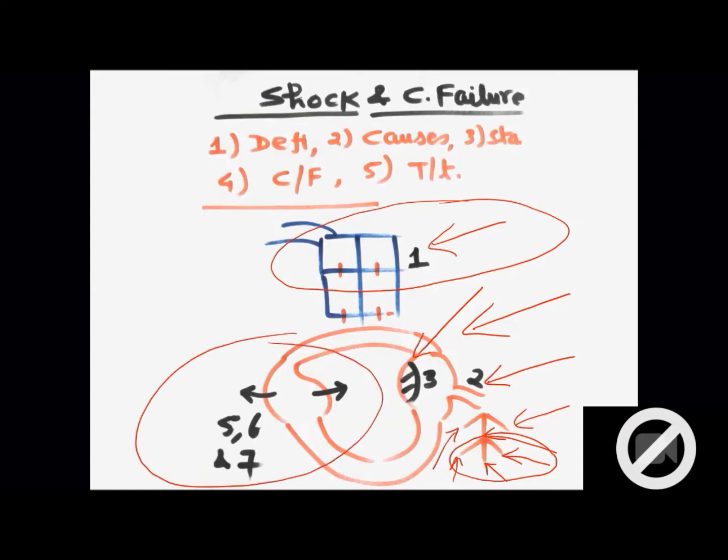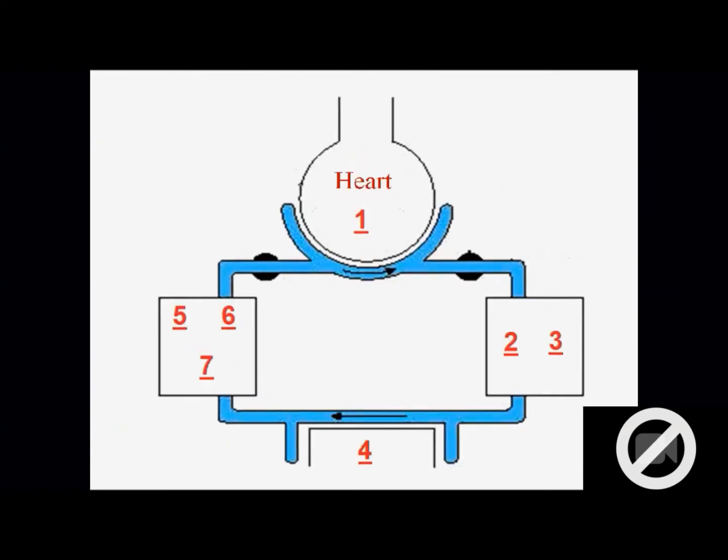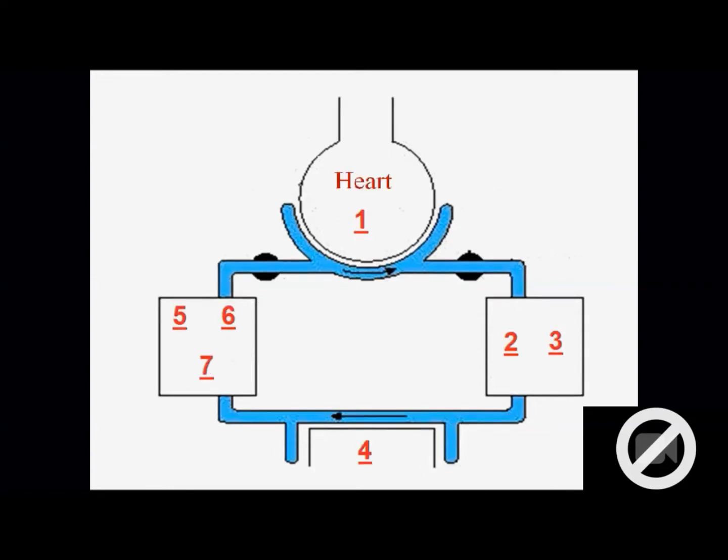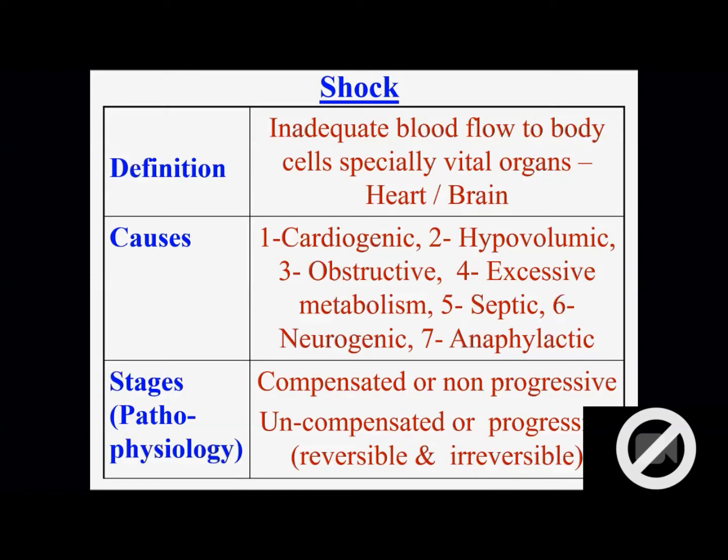Then we are having from this side also: severe infection or neurological condition or anesthesia and some allergy. They can also cause shock because they cause dilatation of vessels. So definition would be inadequate blood flow to body cells. But here you must write vital organs.